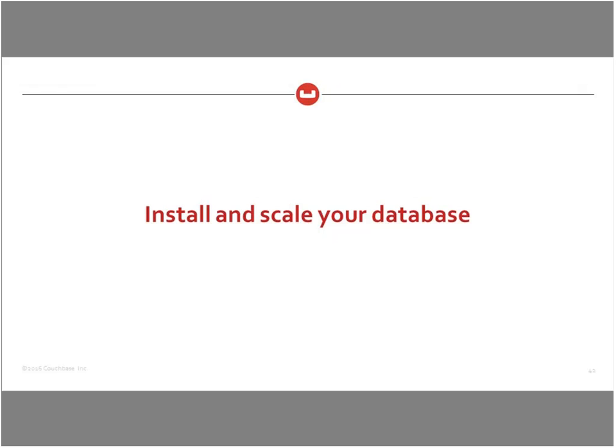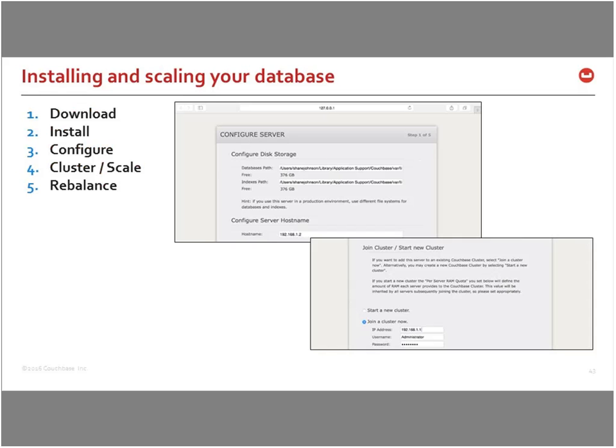Installing Couchbase is straightforward: download, install, bring up the web-based console, define a few things about the server, and save. To scale, install additional nodes that join the existing cluster, then click Rebalance in the UI to redistribute data across the new nodes. This is how you both initially set up a cluster and incrementally scale it by adding nodes as needed.